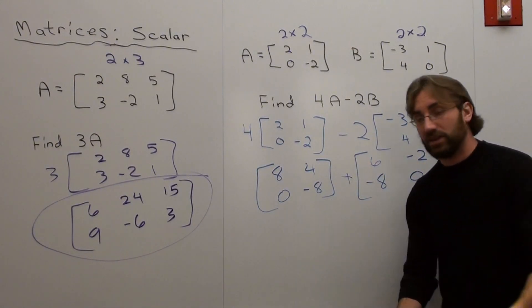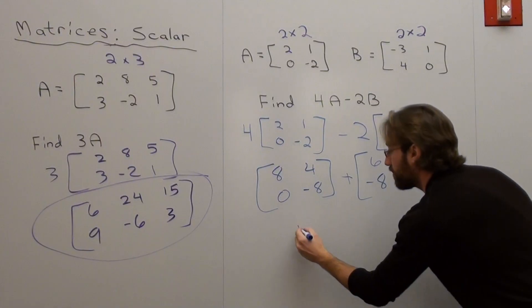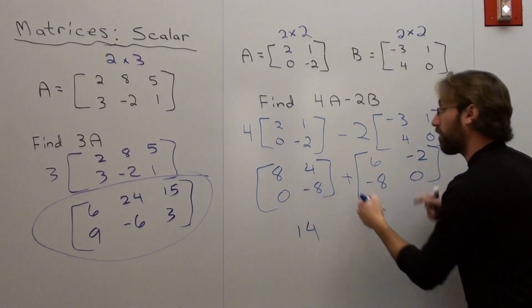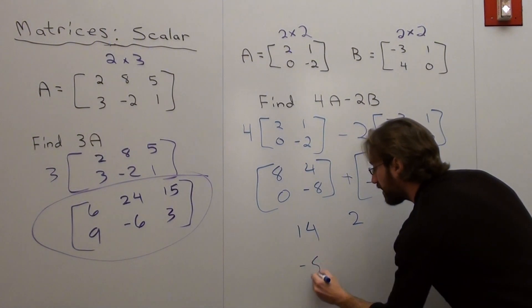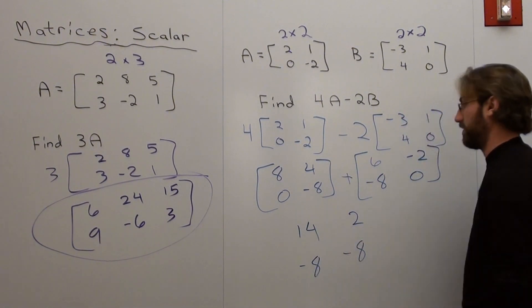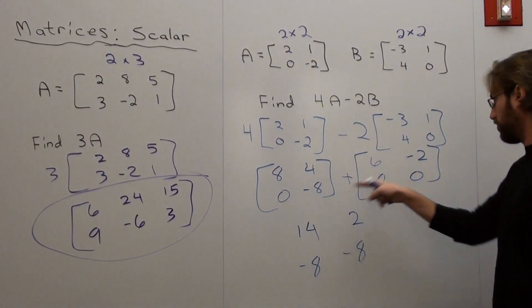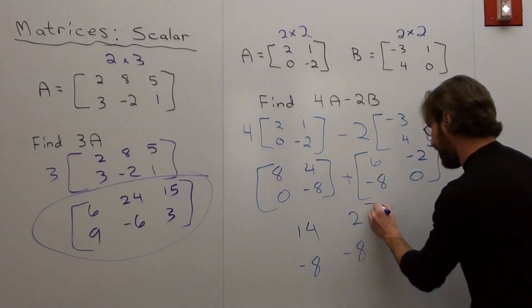So I go ahead and I add those matrices together. 8 plus 6 is 14. 4 plus negative 2 is 2. 0 plus negative 8 is negative 8. Negative 8 plus 0, ooh, that's kind of coincidental. 14, 2, negative 8, negative 8.